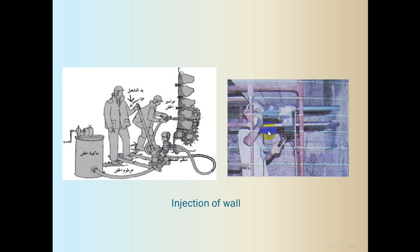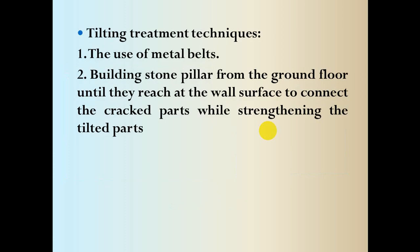Another device is also used for injecting the wall so that wall components bond together. The choice of any of these techniques depends entirely on the condition of the element itself — whether to use disassembly and reassembly, injection, or inserting metal rods inside the wall. All these solutions are chosen by the specialist only after studying the most appropriate solution for treating the problems the wall is suffering from.